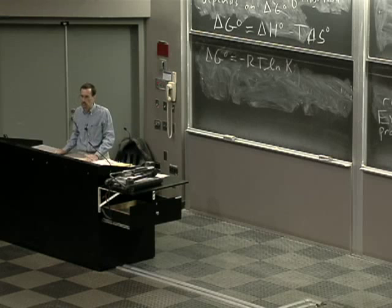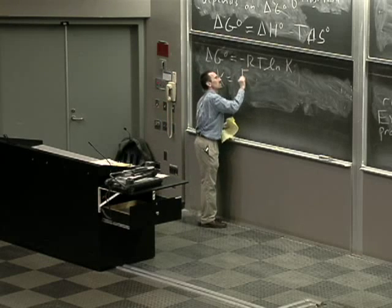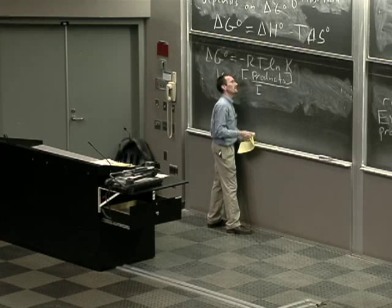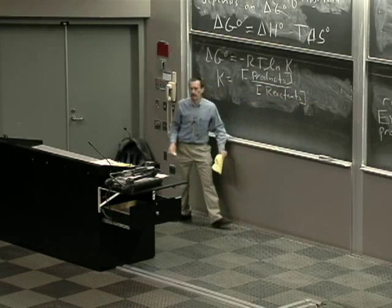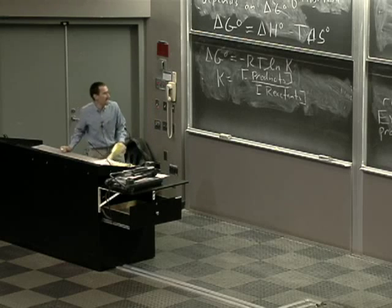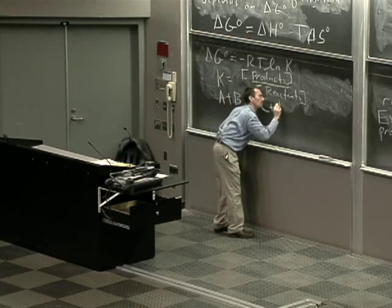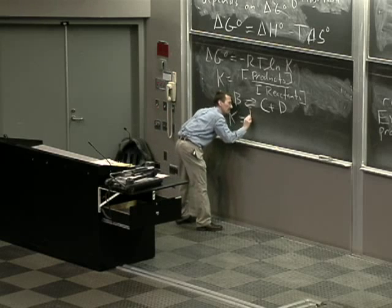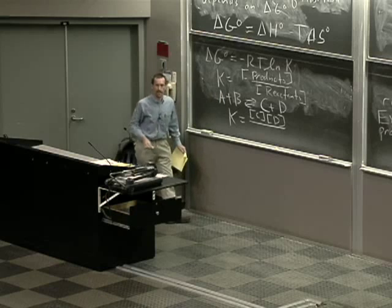The other equation one should know is: delta G naught equals negative RT times the natural log of K, where K is the equilibrium constant. The real question on every reaction is whether the equilibrium lies to the right or to the left. K equals the concentration of products — raised to their stoichiometric powers — over the concentration of reactants. For a reaction A plus B in equilibrium with C plus D, K equals the concentration of C times the concentration of D over the concentration of A times the concentration of B.